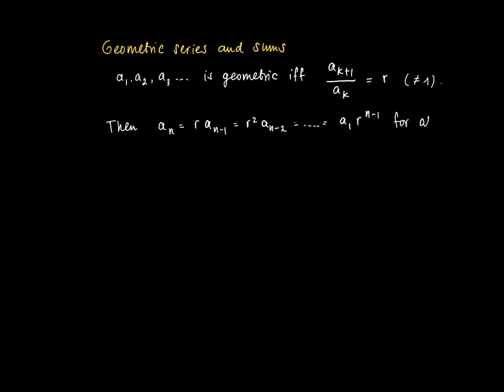Until we end up with the first element in the sequence, which is a1. So we get a_n equals a1 times r to the power n minus 1 for all n.